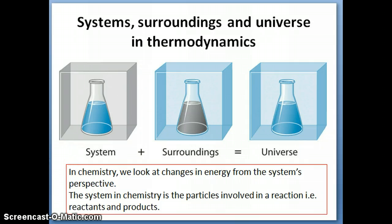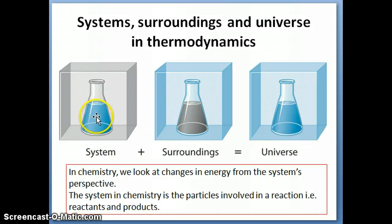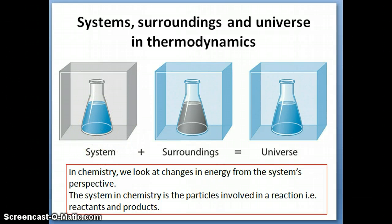So these are basic terms that you need to know. When we talk about calculating the energy of the system, you know what I'm trying to refer to. I want to emphasize that in chemistry, we look at energy from the perspective of the system. It's sort of like you're one of the particles in there, trying to see: am I getting energy or am I losing energy? When we write down the signs later on, we're really looking from the perspective of the system. And in chemistry, the system is our reactants and product particles.